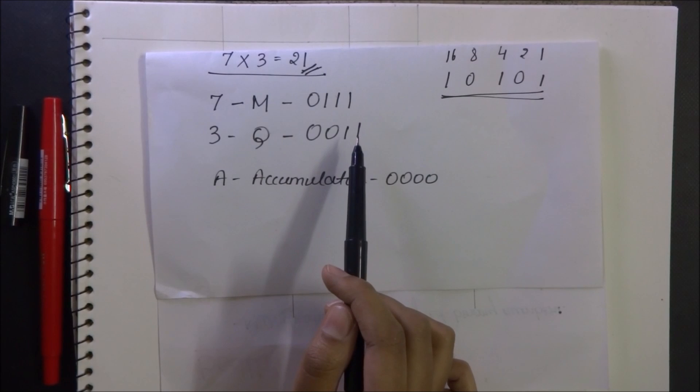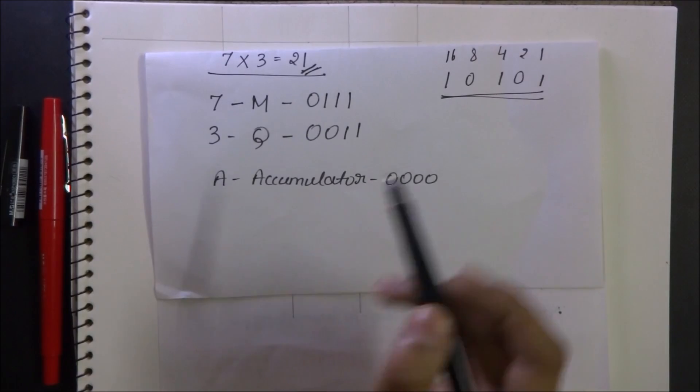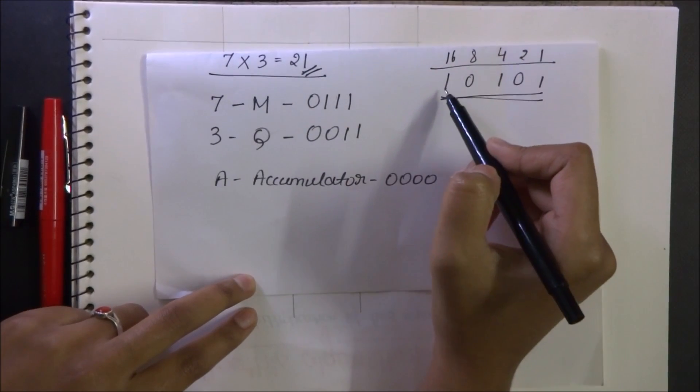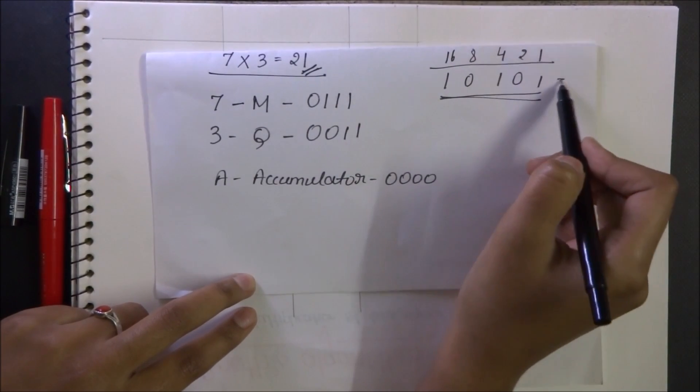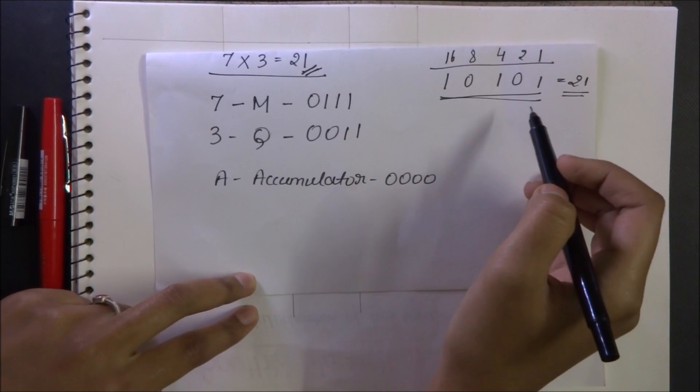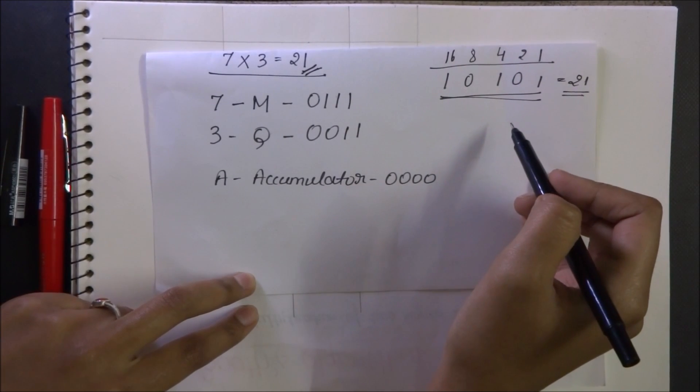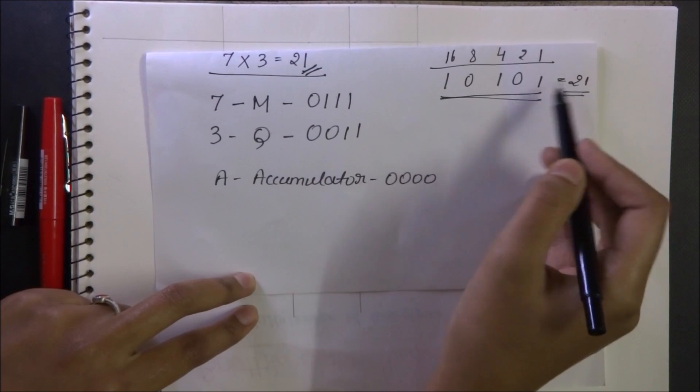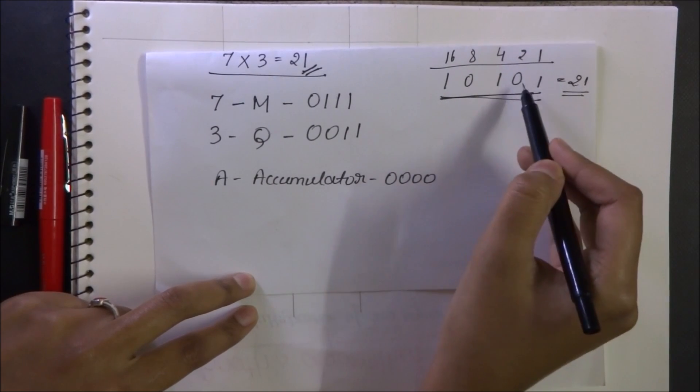By the common knowledge of multiplication, I know that the answer have to be 21, whose binary equivalent is 16 plus 4 plus 1 is 21. So by the end of the fourth step, my answer have to match this 1-0-1-0-1.